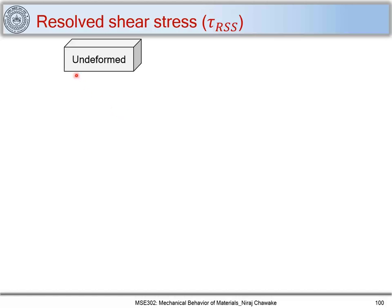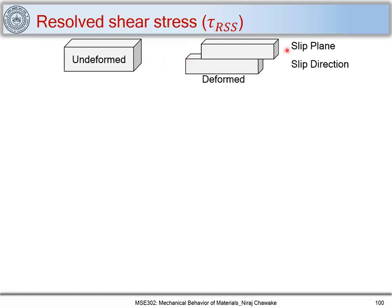We have been dealing with plasticity and trying to understand plastic deformation in materials. We got introduced to two terms: slip planes and slip directions, which together make a slip system. We have an undeformed sample, and when we apply a shear stress it gets deformed using a slip mechanism occurring on a certain crystallographic plane — the slip plane — and along a certain crystallographic direction — the slip direction. Together these constitute a slip system.